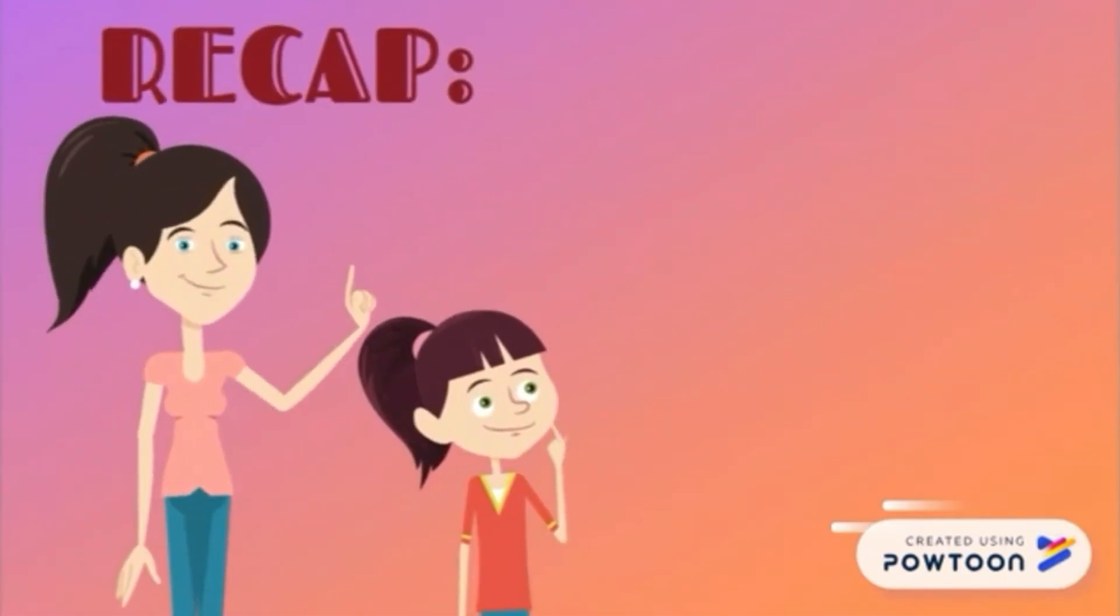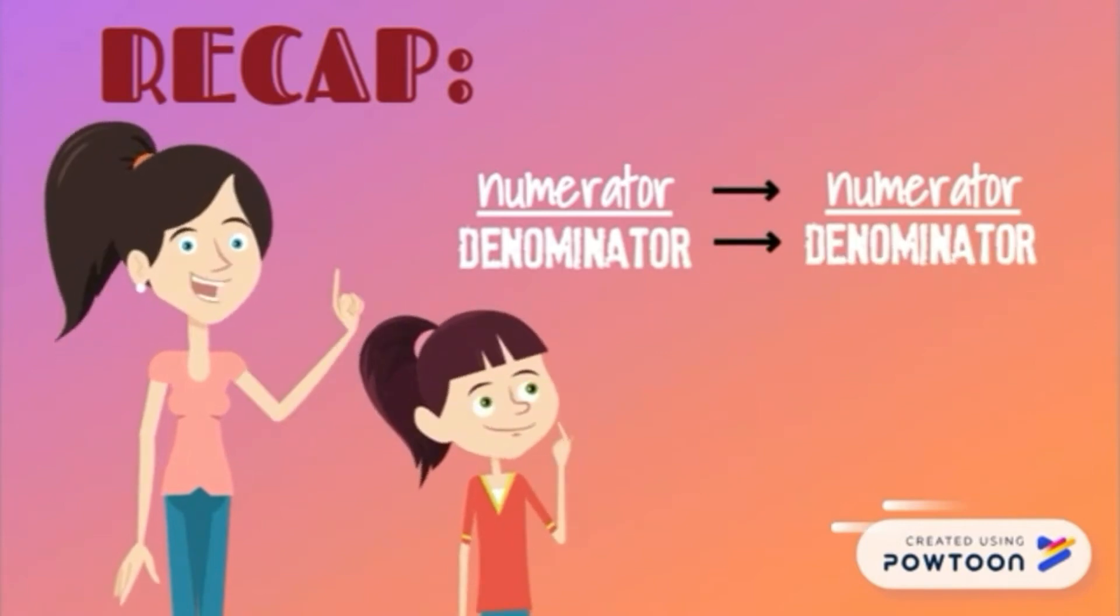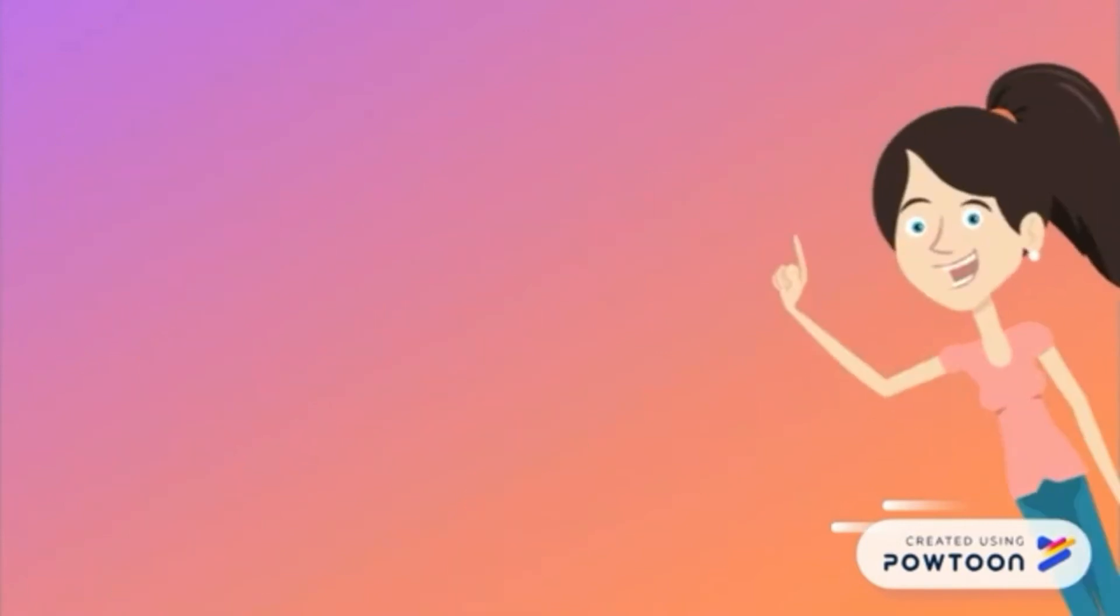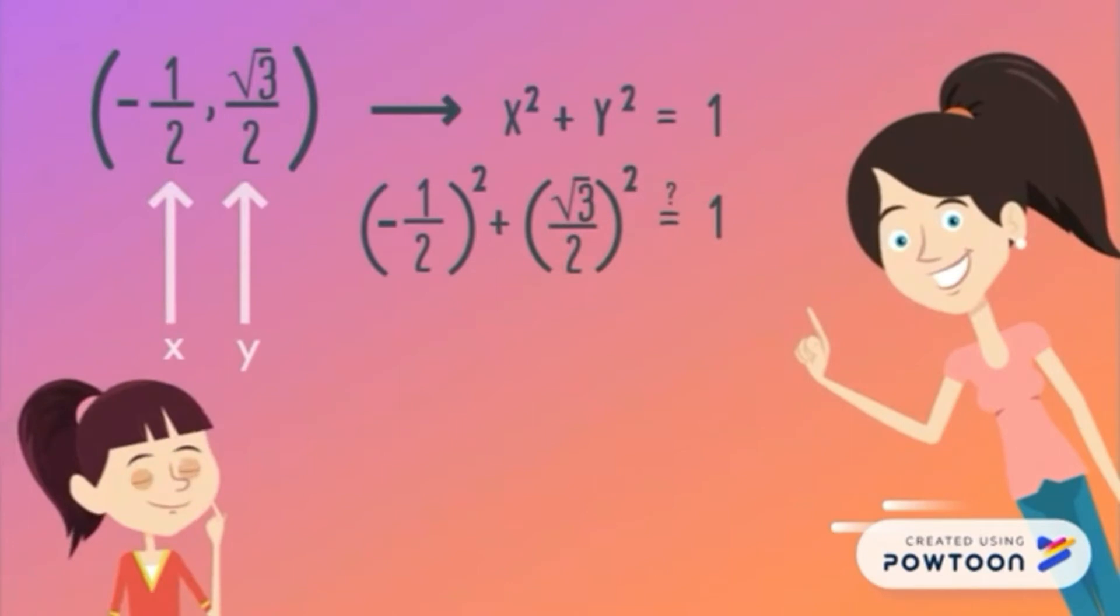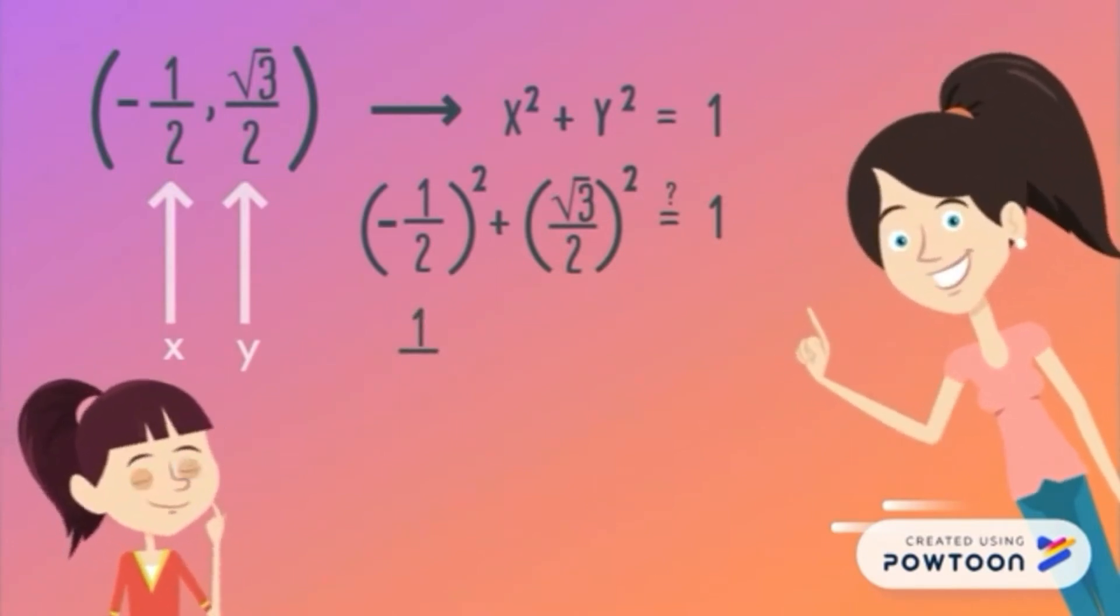Quick recap: To multiply fractions, we have to multiply the numerator to the numerator and the denominator to the denominator. In this example, negative 1 times negative 1 is positive 1, and 2 times 2 is 4. Then we have our x squared, which is 1 fourth.